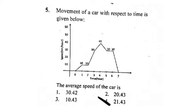Question 5 is a very easy question. We only need to know the average speed of the car, which is 21.43. In my booklet the correct option is option number 4.